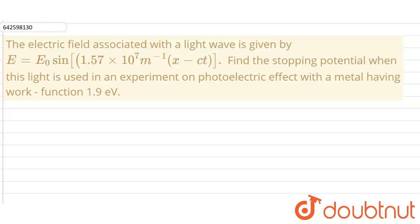Hello everyone, so the question is, the electric field associated with a light wave is given by E equals E0 sin 1.57 into 10 raised to the power 7 per meter into x minus ct.